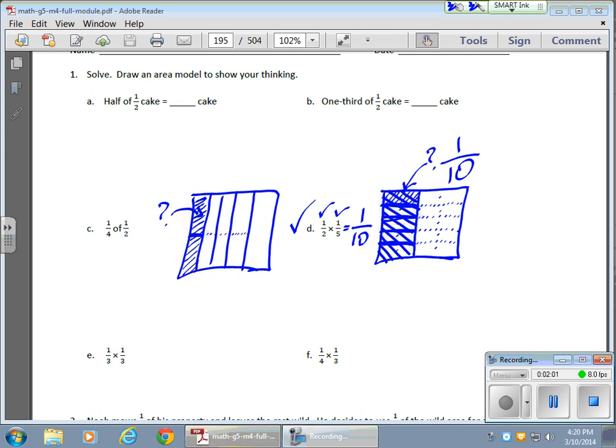Well, if I continued, and I made all of the boxes the same size, that would mean, once again, I have 1, 2, 3, 4, 5, 6, 7, 8, 9, 10 total boxes, and the part that's fully shaded in is 1, so 1 tenth.